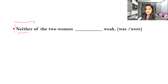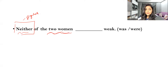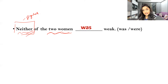Again, this sentence has 'neither'. We have already studied that whether it is 'either' or 'neither', we always treat it as singular. Here: 'Neither of the two women —' even though we are talking about two women, since we have 'neither', we will use a singular verb — which is 'was'.